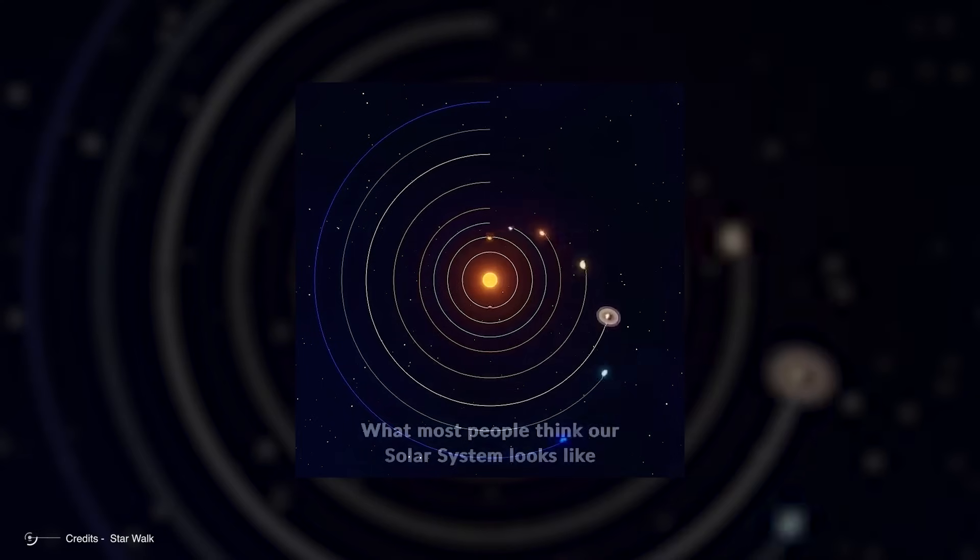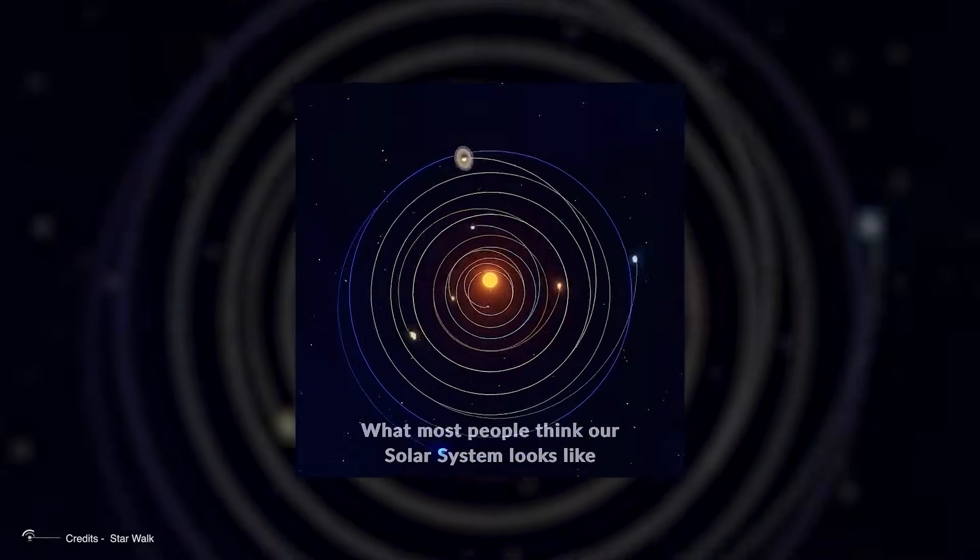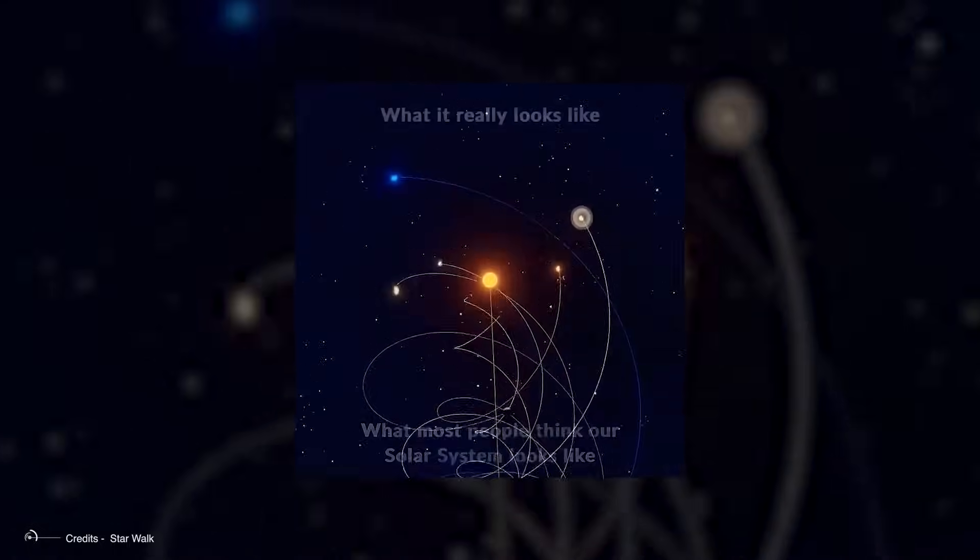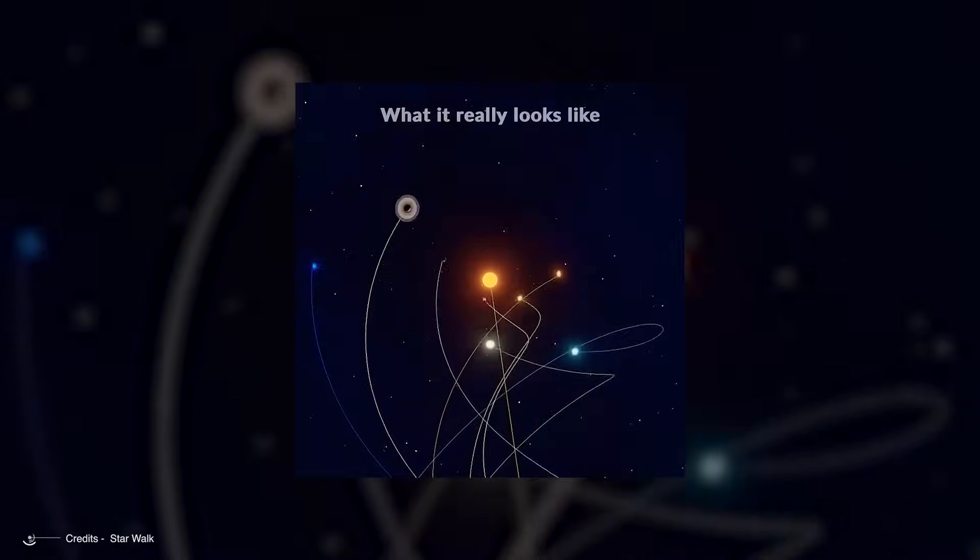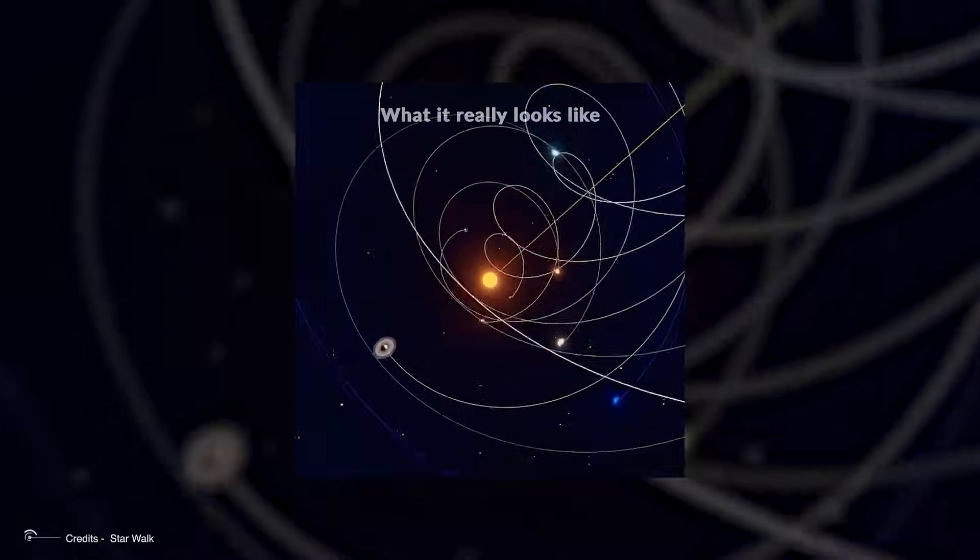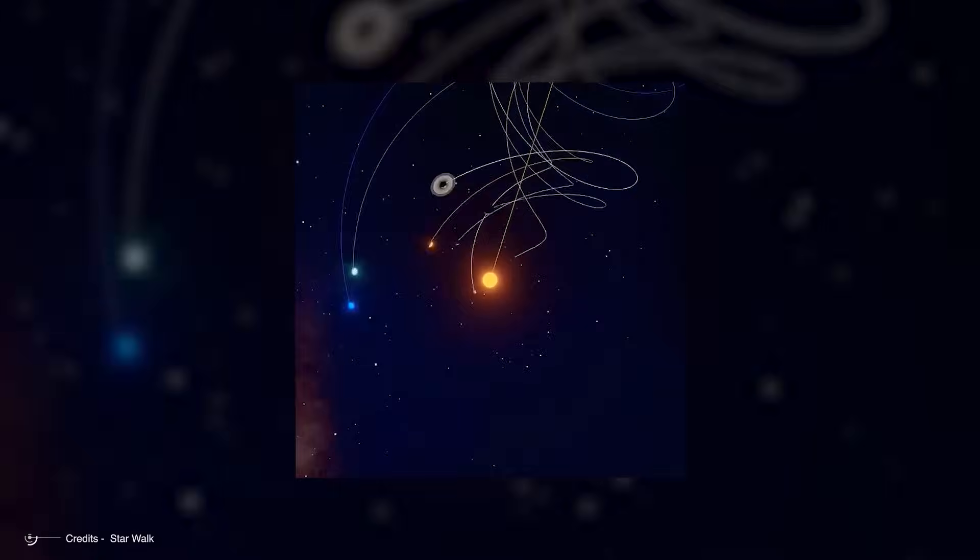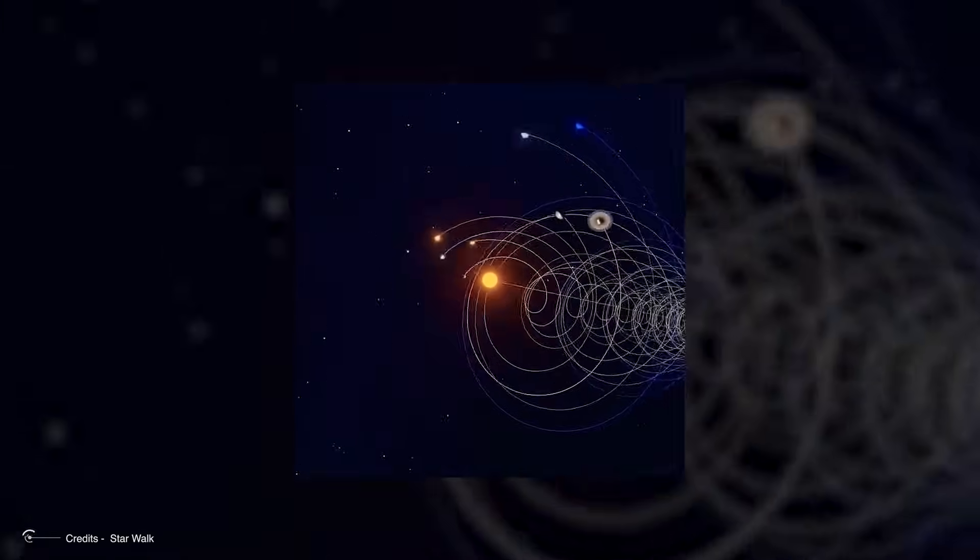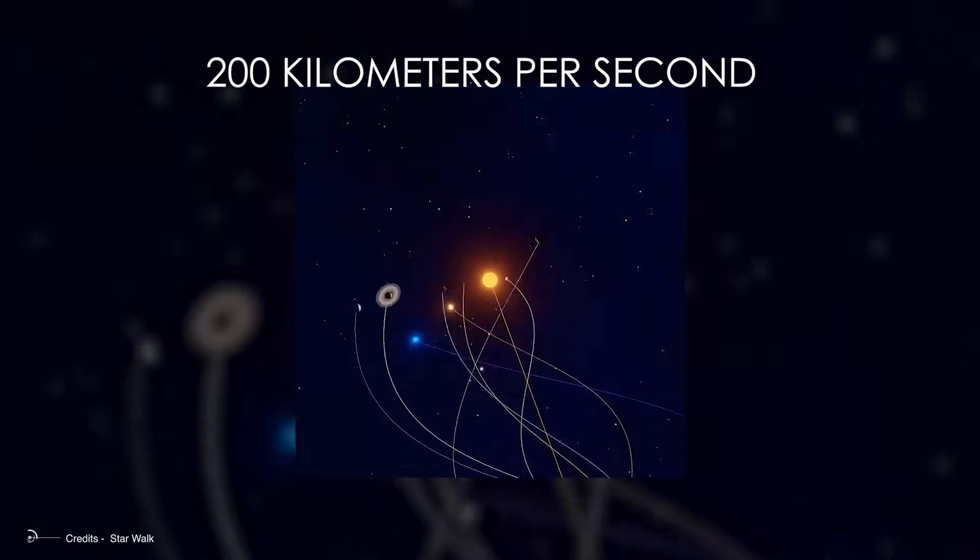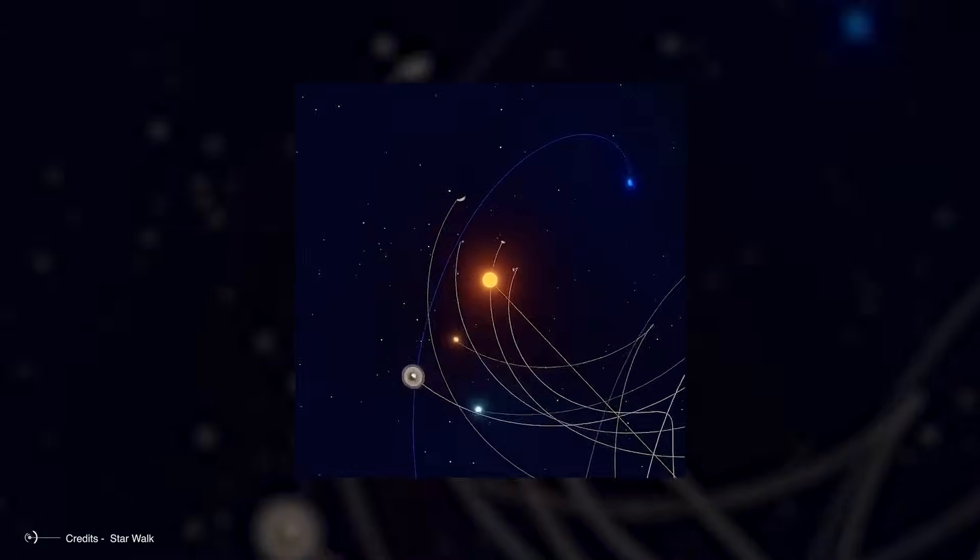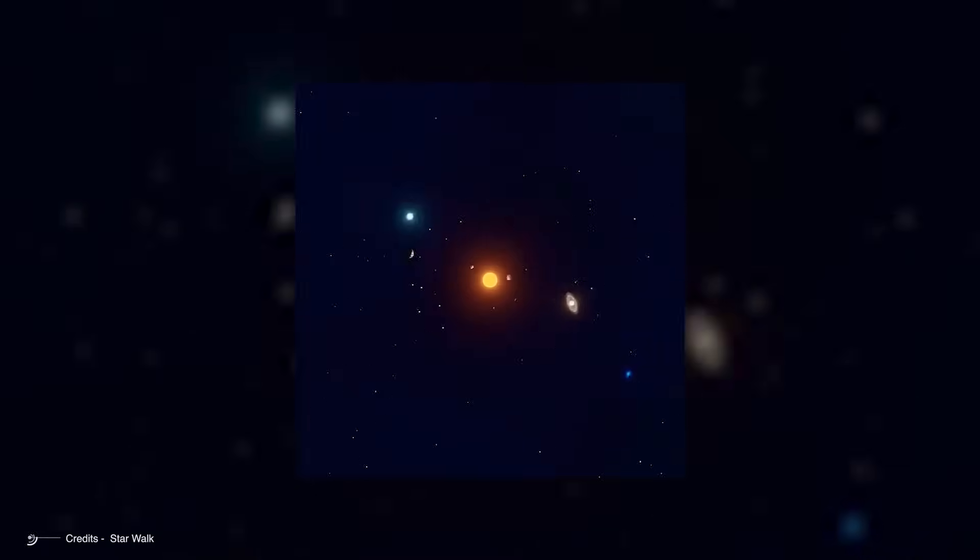Zooming out even further exposes perhaps the most shocking revelation of all. Our entire solar system is careening through space at breakneck speeds, constantly interacting with different galactic environments that mainstream astronomy conveniently glosses over. While they've kept you focused on planets and moons, they've neglected to mention we're hurtling through the cosmos at over 200 kilometers per second, encountering cosmic structures that make our planetary system look microscopic by comparison.